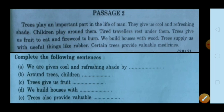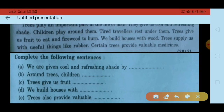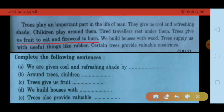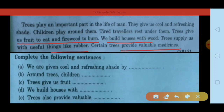अब एक और example है — second passage: Trees play an important part in the life of man. They give us cool and refreshing shade. Children play around them. Tired travelers rest under them. Trees give us fruit to eat and firewood to burn. We build houses with wood. Trees supply us with useful things like rubber. Certain trees provide valuable medicines. यह important points हैं — इन्हें underline करें।